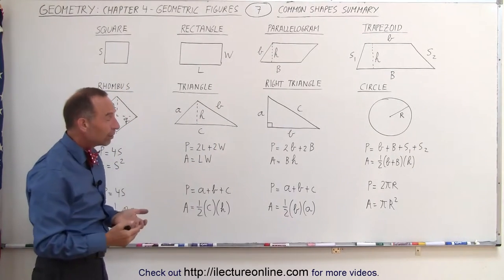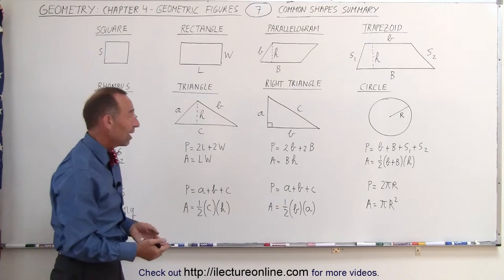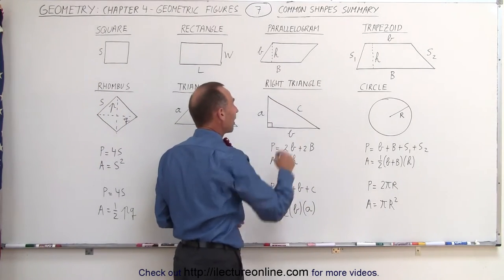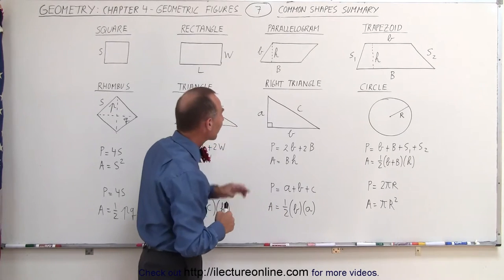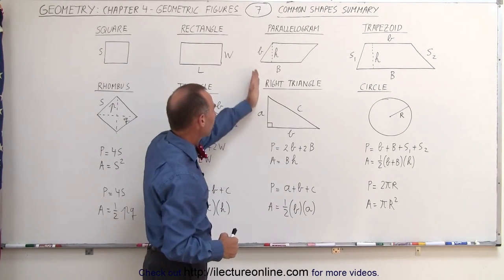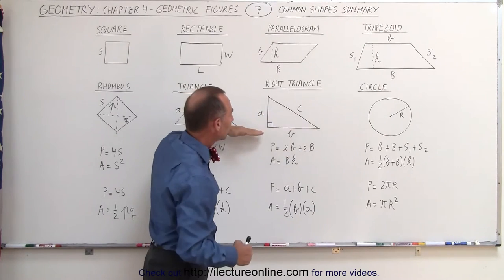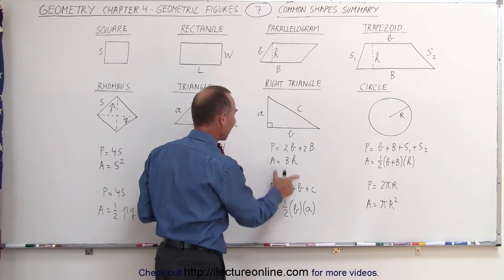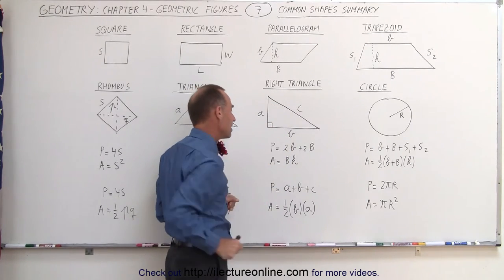For the right triangle, the equations are just the same. The perimeter is a plus b plus c, simply the sum of the sides. But for the area, notice that the height here is equal to the short side a, which is perpendicular to the bottom side here called b. So one-half the base times the height becomes one-half b times a.